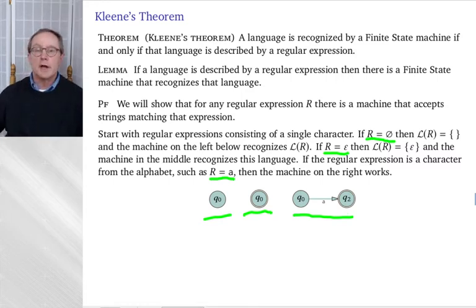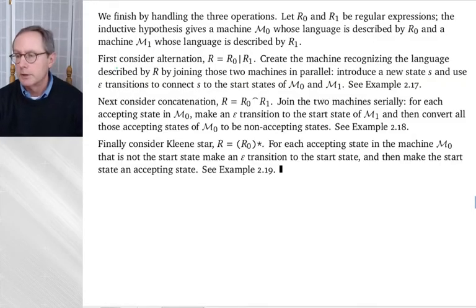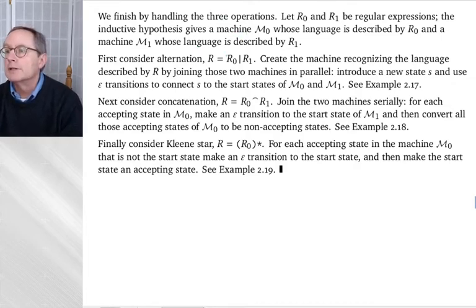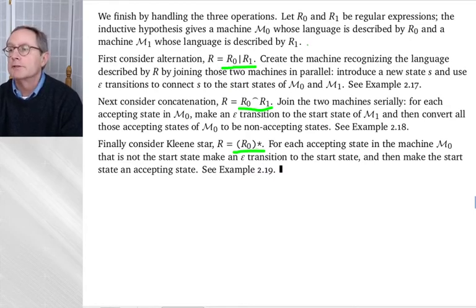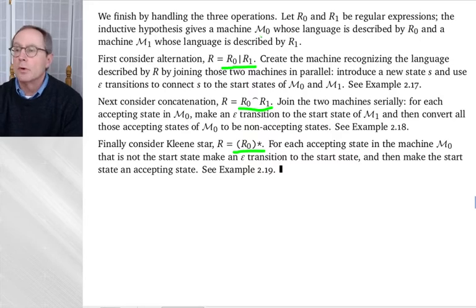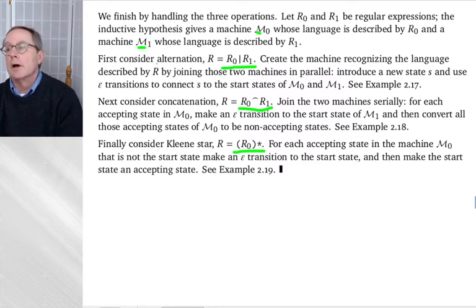Now we think about what happens when you build regular expressions up from smaller ones — the inductive cases. A regular expression can be two regular expressions joined by a vertical bar (union), by concatenation, or by the star operator. The proof by induction works by assuming R0 has an associated machine M0 and R1 has an associated machine M1, and then handling each of the three cases.